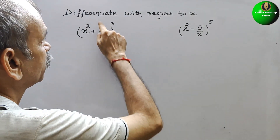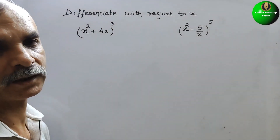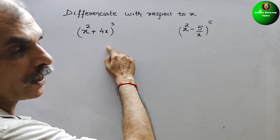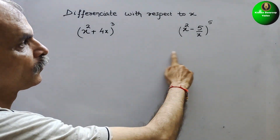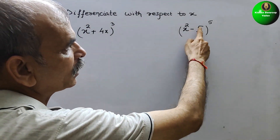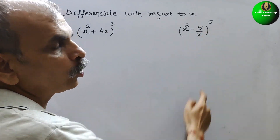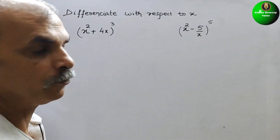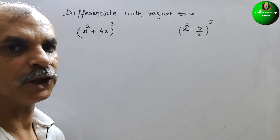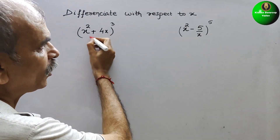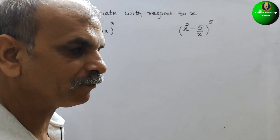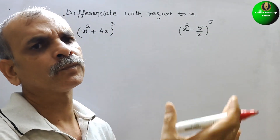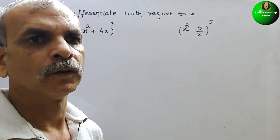The question is to differentiate with respect to x. They have given (x² + 4x)³ and also (x² - 5/x)⁵. Since we have binomials here, whenever a binomial or trinomial appears inside a bracket with a power, we will go for the chain rule.